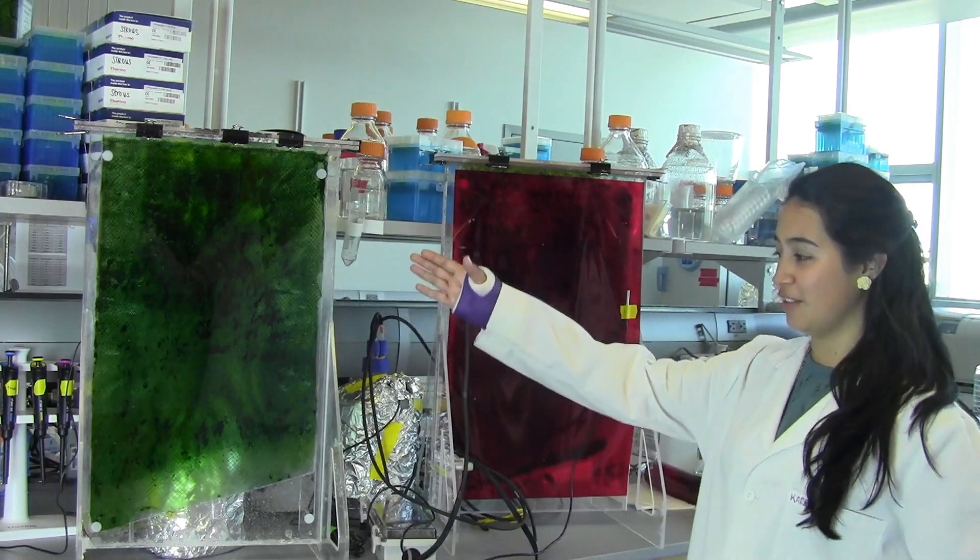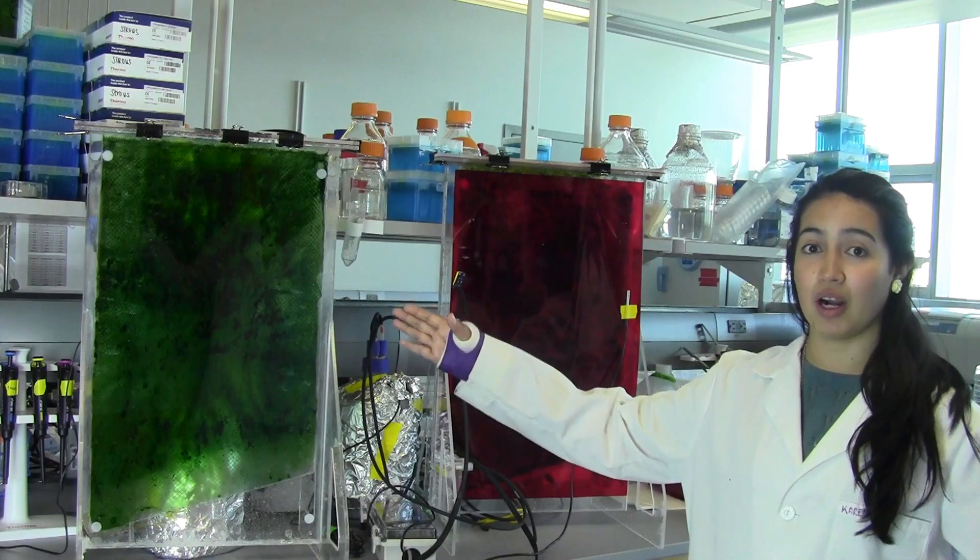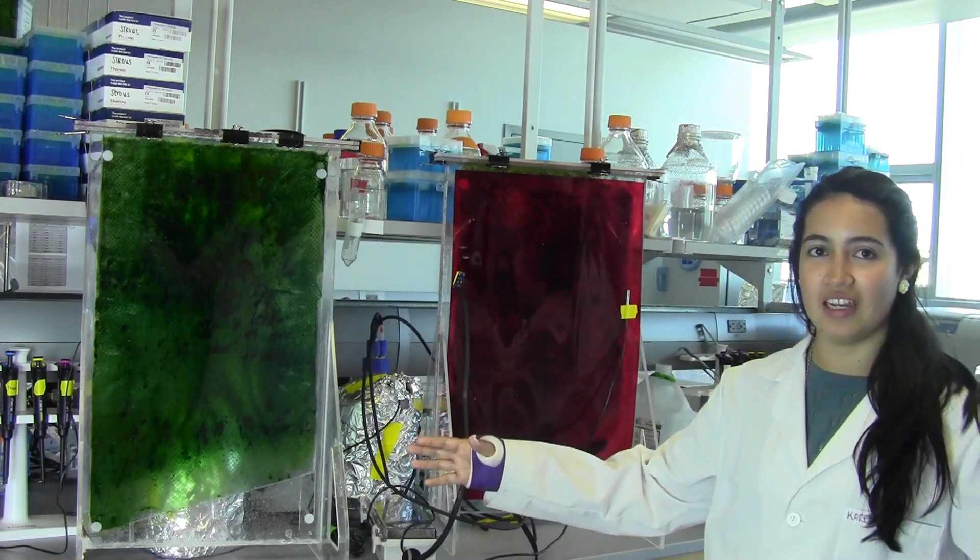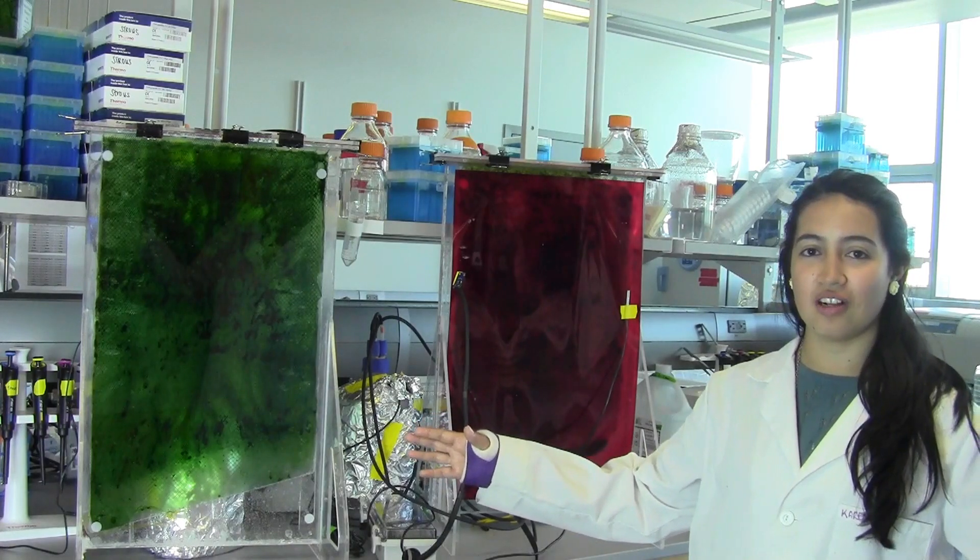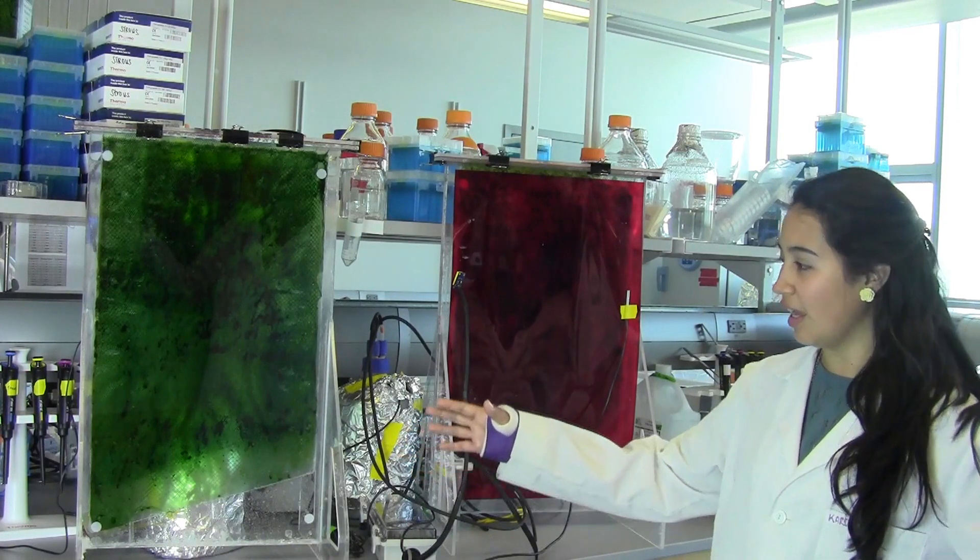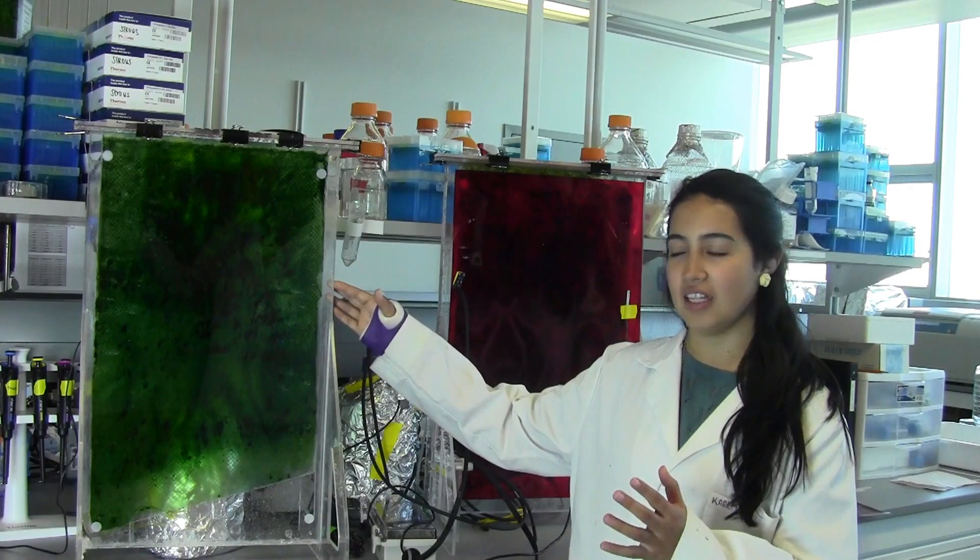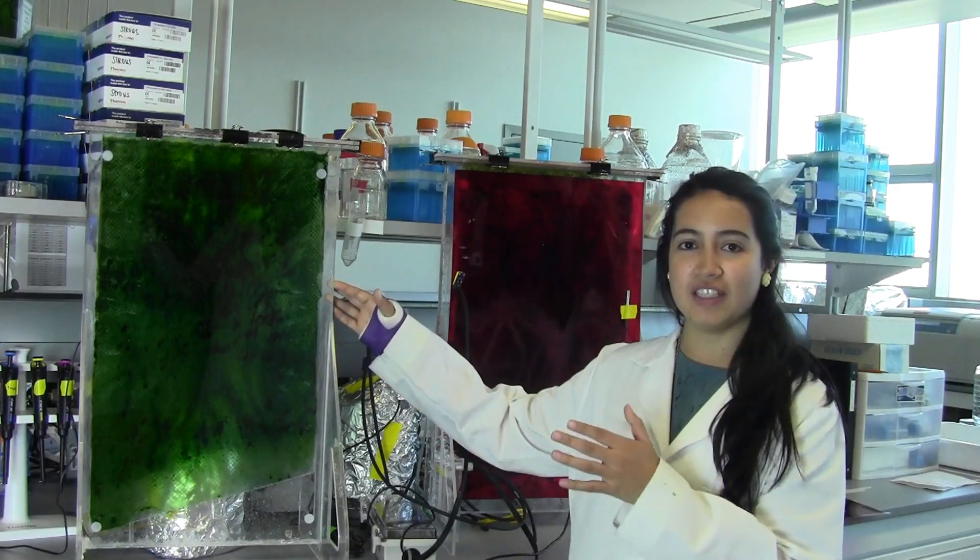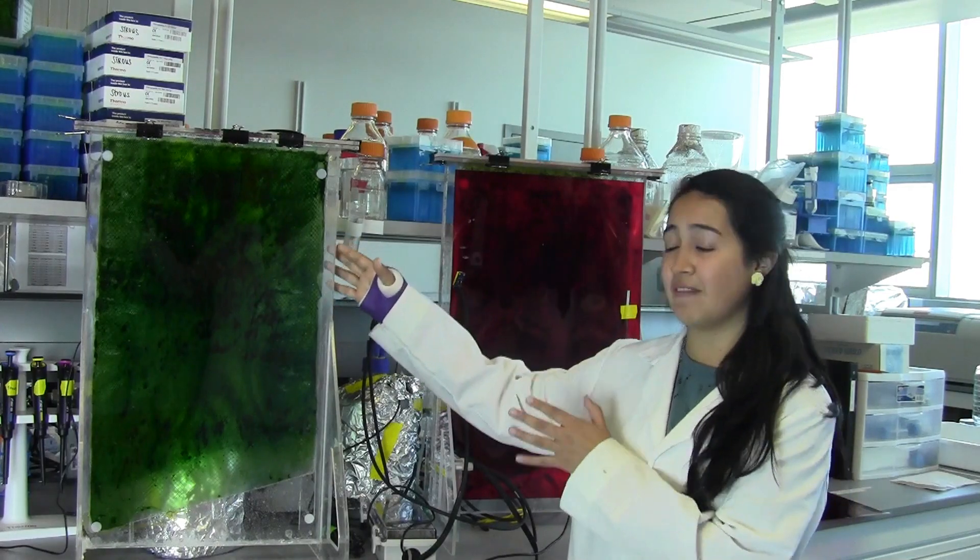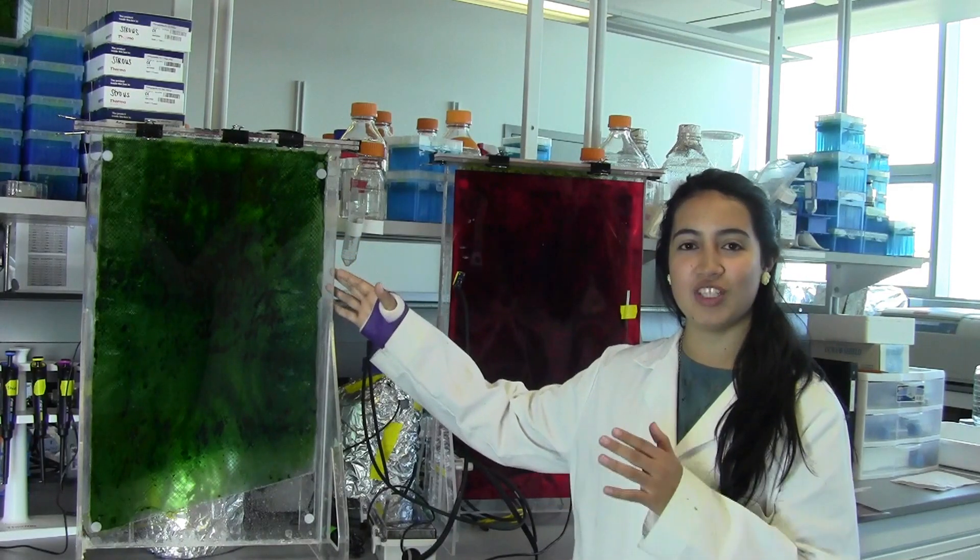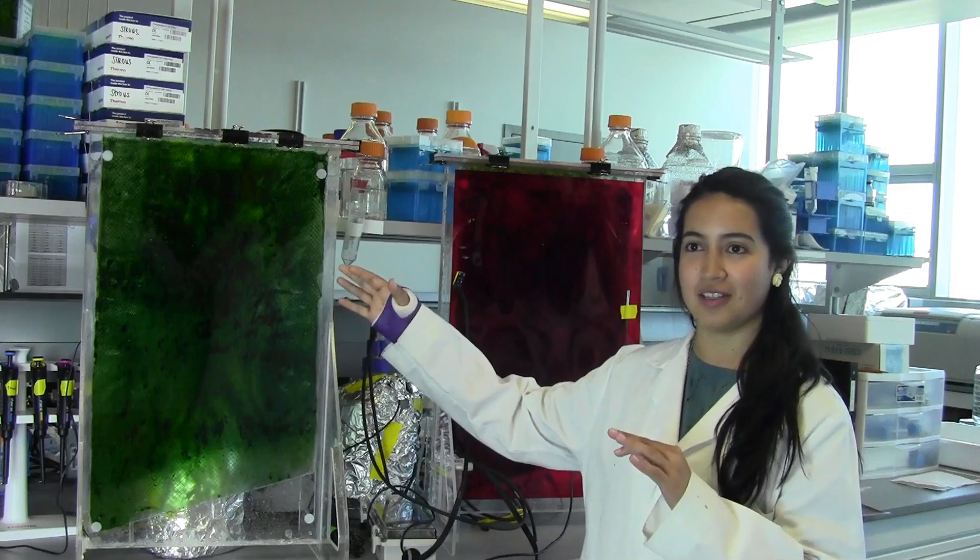Now this here is a photo bioreactor where we grow our algae and that green thing that you see inside is the algae we grow, which is called cyanobacteria. And this equipment here is made of acrylic, so it allows the light to go inside and feed the algae. This is a very narrow aquarium with only three millimeters of depth.